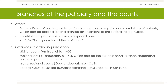Constitutional jurisdiction occupies a special position. The Federal Constitutional Court, the Bundesverfassungsgericht, has the function of the guardian of the Basic Law. The instances of ordinary jurisdiction are district courts, so-called Amtsgerichte, regional courts, Landgerichte — which can be the first or the second instance depending on the importance of the case — higher regional courts, or Oberlandesgerichte, and, as the highest instance, the Federal Court of Justice, the Bundesgerichtshof, BGH, which is seated in Karlsruhe.